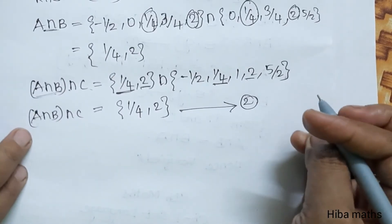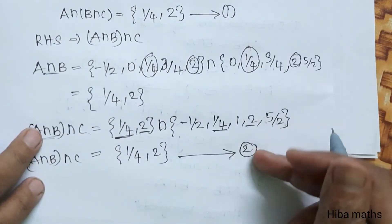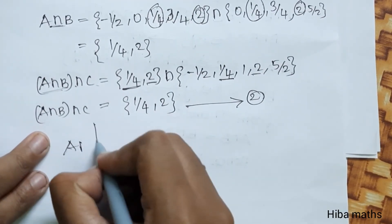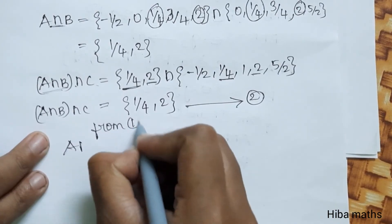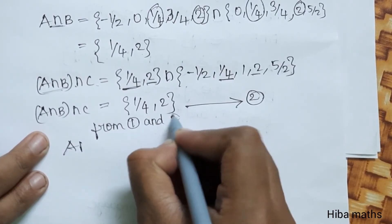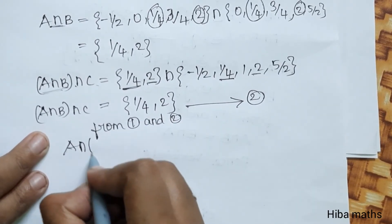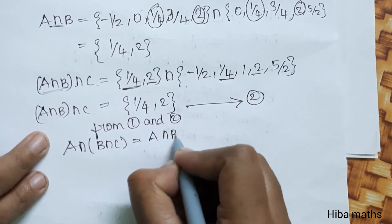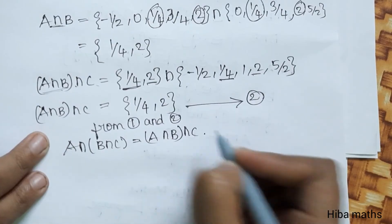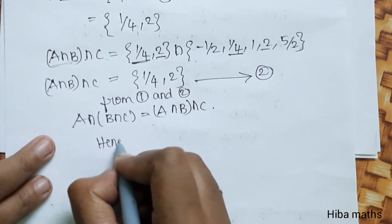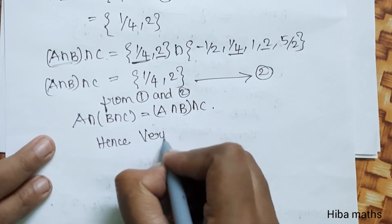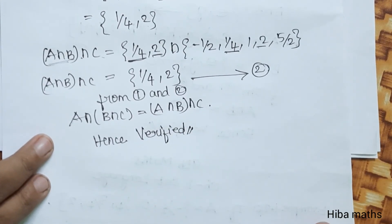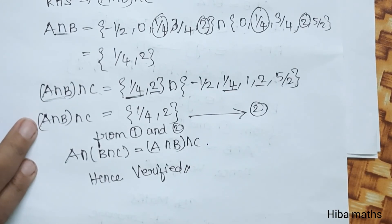Comparing the two answers: LHS = {1/4, 2} and RHS = {1/4, 2}. Therefore, A intersection (B intersection C) is equal to (A intersection B) intersection C. Hence verified. This is very simple — some of you will understand. You will solve it.